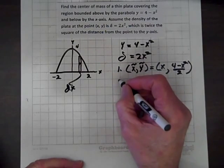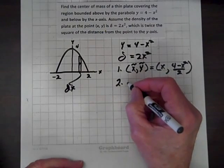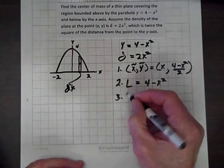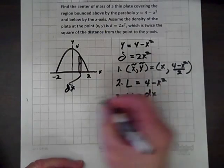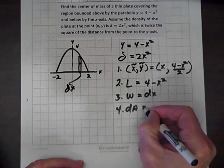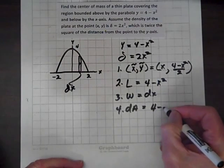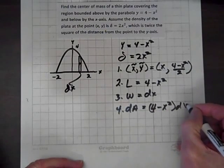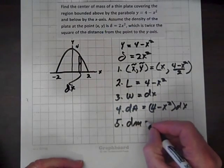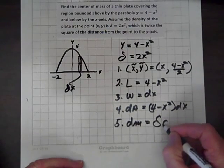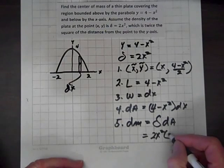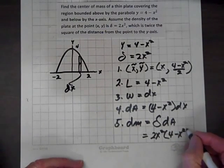Our next step is to identify the length of the strip. The length of the strip is 4 minus x squared. The width of the strip is dx. The area of the strip is length times width: 4 minus x squared dx. And the mass of the strip equals the density times the area, which equals 2x squared times 4 minus x squared dx.